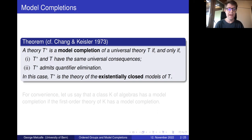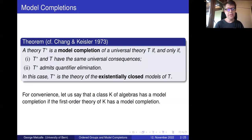For example, some familiar examples: the model completion of the theory of total orders is the theory of dense total orders without endpoints, or the model completion of the theory of Boolean algebras is the theory of atomless Boolean algebras. It's a bit of a mouthful always to speak about the model completion of a theory of a class, so let me say that a class K of algebras — by which I just mean algebraic structures — has a model completion if its first-order theory has a model completion.